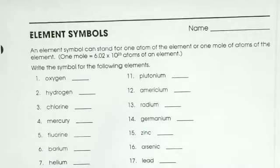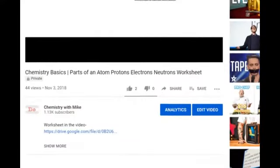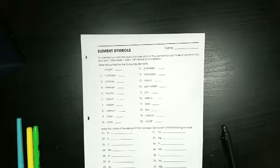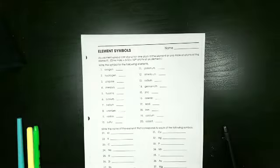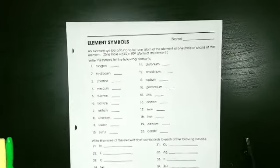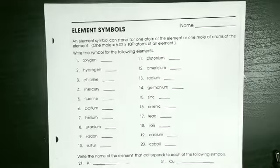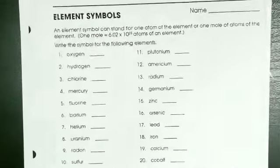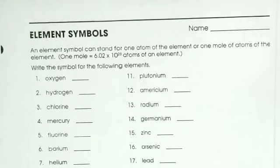Now before we start, you can get a copy of this worksheet from the link in the description below. Print the worksheet and follow along. For every assignment, make sure to put your name, today's date, and your period at the top. Here we are given a bunch of element names and we need to find their symbols. An element symbol can stand for one atom of the element or one mole of atoms of the element.